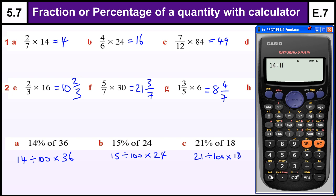14 divided by 100 times 36 gives us 5.04. 15 divided by 100 times 24. Now, when you get good with percentages, you can skip a few parts. So this divided by 100, I know 21 divided by 100 is 0.21 times 18. So I don't need to do the divide by 100.